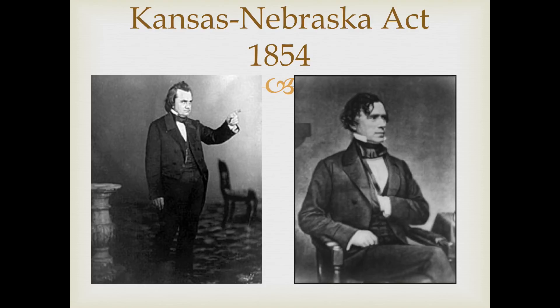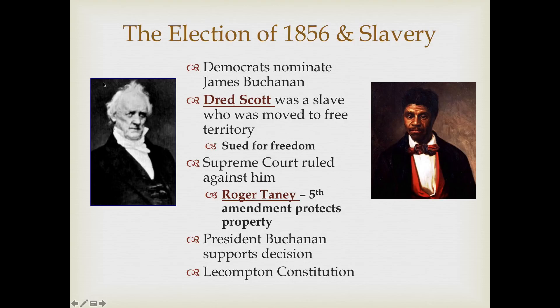The election of 1856 is around the corner, so the Democrats do not want to re-nominate Franklin Pierce. They nominate a new Democrat, James Buchanan, and he becomes the new president — but it only gets worse now with yet another Northern Democrat.